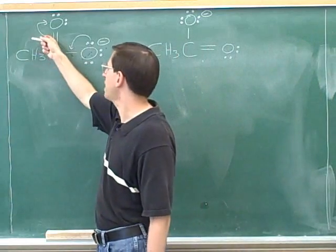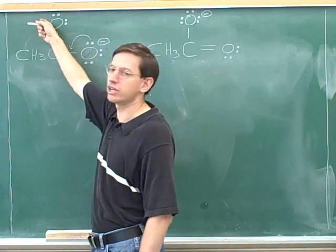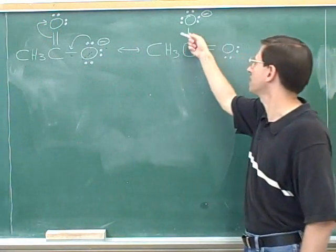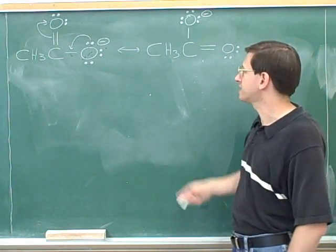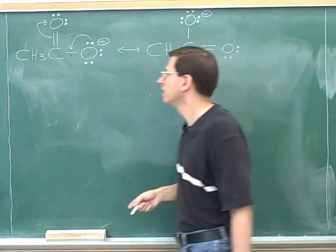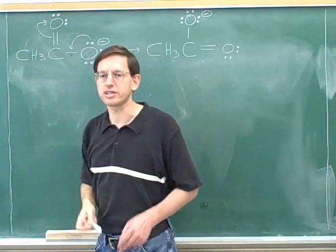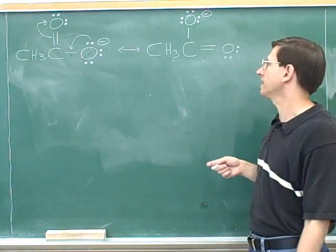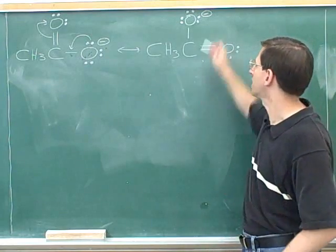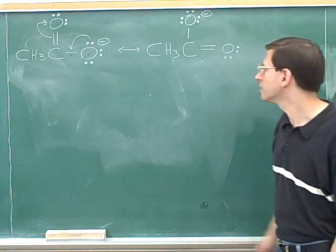On the other hand we took this pi bond and turned it into a third lone pair on the oxygen. So the pi bond is gone here and instead there's a third lone pair on the oxygen. Well you can see according to this arrow that the electrons are moving towards the oxygen. The oxygen is gaining electrons so it shouldn't be surprising that it's going to go from a neutral formal charge to a negative formal charge.